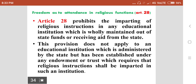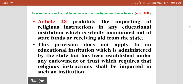Article 28 — Freedom as to attendance in religious functions — prohibits imparting of religious instructions in any educational institution fully maintained out of state funds or receiving aid from the state. However, this provision does not apply to any educational institution administered by the state but established under any endowment or trust which requires that religious instructions shall be imparted in such an institution.